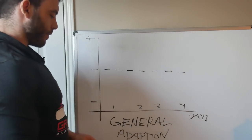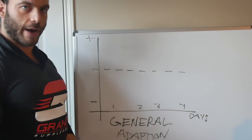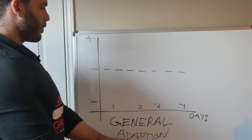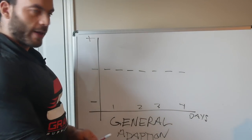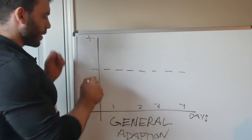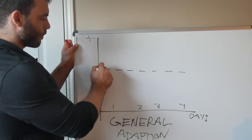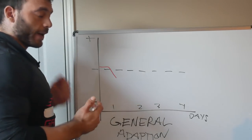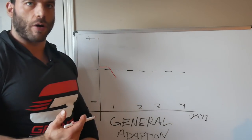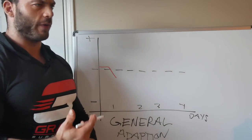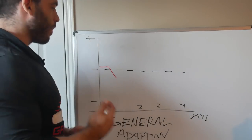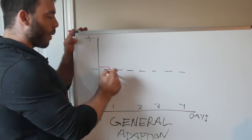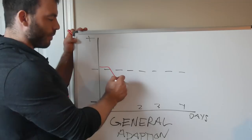And General Adaptation Syndrome explains how your body responds to your actual training. So you start out with a workout, an intense workout. And actually, so here's the workout, your body actually gets weaker at first. This is your body kind of freaking out. So you train really hard, and all of a sudden you get sore, you feel tired, run down. And your body actually cannot perform as well in this state as it could before.